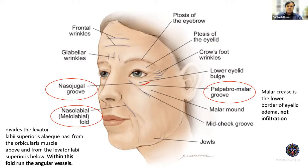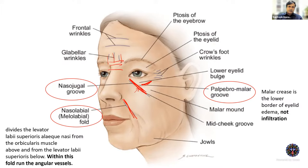The palpebromalar groove on the lateral temporal side limits eyelid edema but not infiltration. The nasojugal groove and the nasolabial fold are important — the nasolabial fold, also called the melolabial fold, contains the angular vessels. When injecting a filler in that area, be very careful as it can cause bleeding and embolism. The nasojugal groove is sometimes a cosmetic concern. Also look for glabellar wrinkles — horizontal or vertical — each indicating overaction of a particular set of muscles.